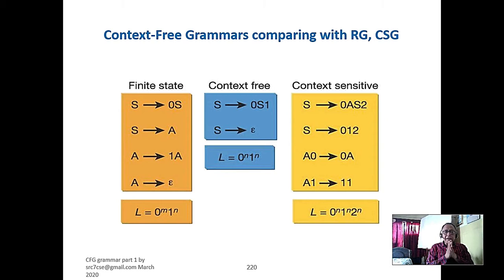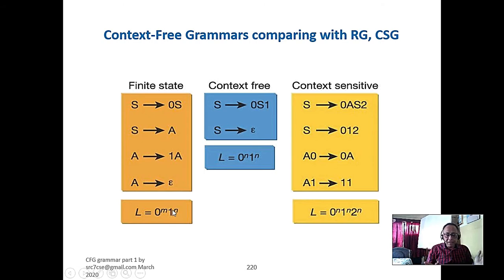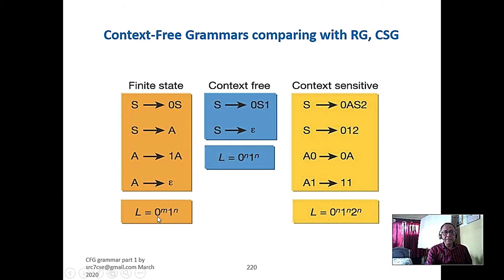Then we accept S going to epsilon. S is the start variable and we know what kind of sentences we get: 0 to the power m and 1 to the power n. In my earlier classes, I told a to the power m, b to the power n, where m and n have no relation. Here the alphabet is small a and b, and here the alphabet is 0 and 1. So this is a regular grammar — very useful. I have told you lots of cases where regular grammar is enough.